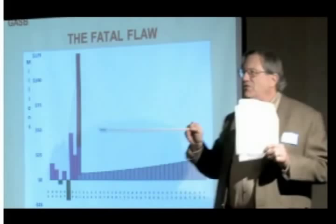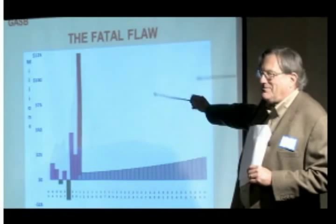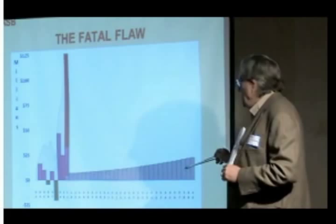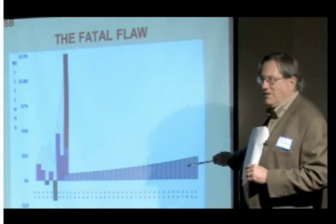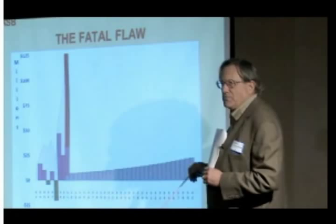So here's the trillion dollar question: when did the expense happen that created that debt? Go back to the current rule. The pension expense is the combination of your normal contribution each year and the payments you make to eliminate the unfunded liability. So what's going to happen under the old rules is the normal cost in each of these years is going to be added to this, and that's going to be reported as that year's pension expense.